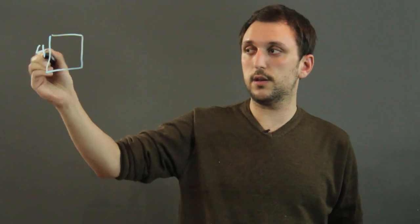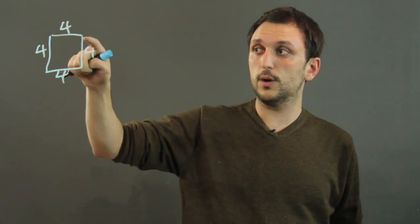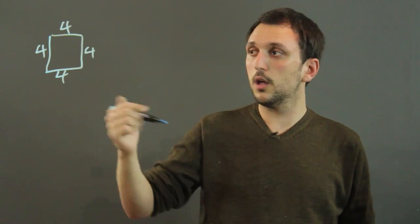Now, with a square, all the sides are equal. So if we know that this side is 4, then we know that this side is 4, this side is 4, this side is 4. So any length that we draw horizontally or vertically across the square is going to be 4.